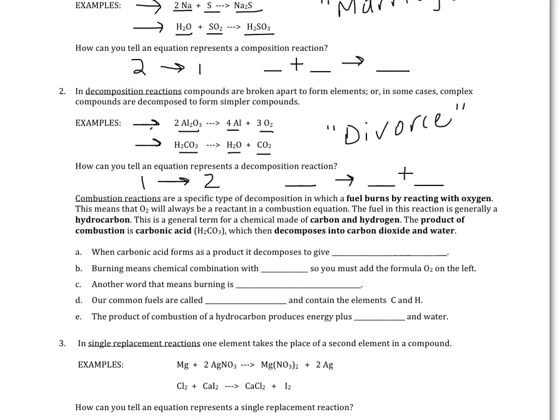Gasoline is one common fuel, but all of our different fuel types are what we call hydrocarbons — compounds made up of some variety of carbons and hydrogens. Hydrocarbons can always be decomposed. When they decompose, they form carbonic acid, H2CO3, and then the carbonic acid decomposes into carbon dioxide, water, and energy — which is why we enjoy those reactions.